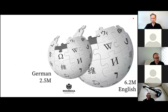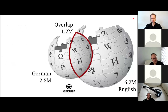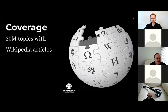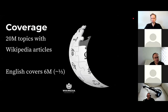It's not just small languages versus big languages. If you compare English's six million articles to German's two and a half million, about half of the German article topics are also represented in English Wikipedia — but more than one million German Wikipedia articles cover topics the English Wikipedia has no knowledge about at all. There are about 20 million topics with Wikipedia articles, and English only covers about a third of those.